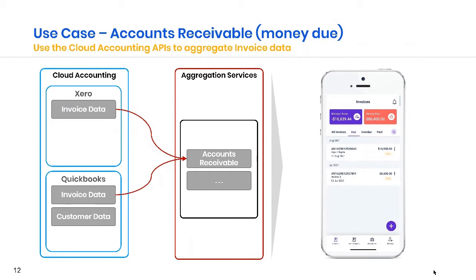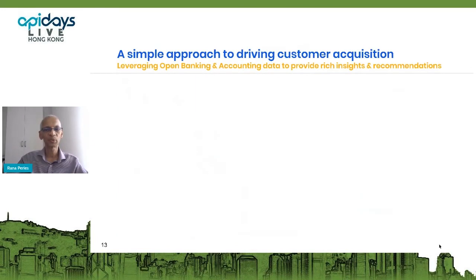Whether at the retail end of the market or the SME end, people don't have a purely banking relationship — they interact with other platforms. For example, a lot of small businesses have interactions with cloud accounting platforms like Xero and QuickBooks. You could have aggregation APIs that pull invoice data from there to show total money due or total money out, so you can see how this open data aggregation can create interesting insights and experiences for the consumers of apps.